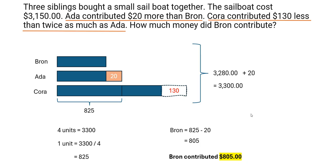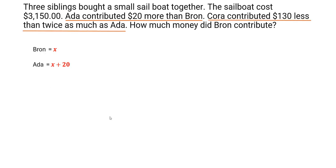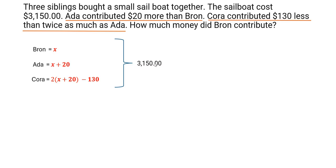Brawn contributed eight hundred and five dollars. Now let's look at the same problem and see how we can use algebra to solve it. Ada contributed twenty dollars more than Brawn — again Brawn is our reference. So let's assume Brawn's contribution is X dollars. Ada would be X plus twenty because she contributed twenty more than Brawn. For Cora, she contributed one hundred and thirty dollars less than twice as much as Ada, so Cora is two times of (X plus twenty) minus one hundred and thirty. The whole thing together equals three thousand one hundred and fifty dollars.